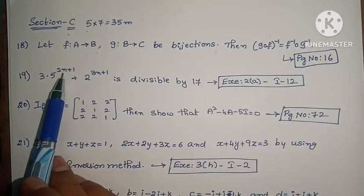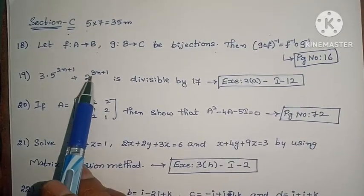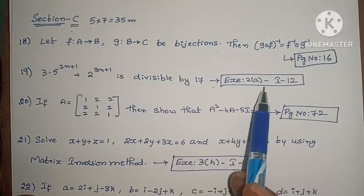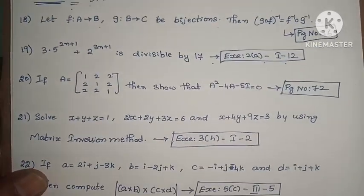Next, students, prove that 3 into 5 to the power of 2n plus 1 plus 2 to the power of 3n plus 1 is divisible by 17. Exercise 2, First Roman, Twelfth one.